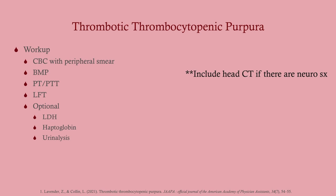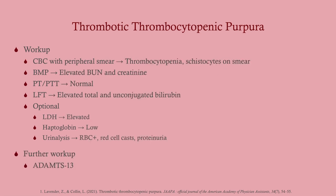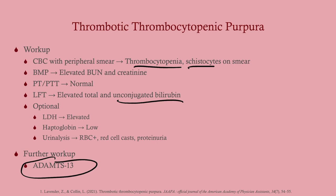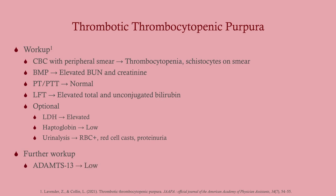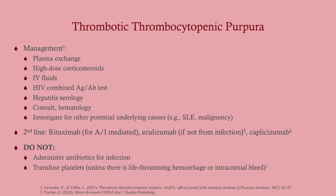Workup includes a CBC with peripheral smear, BMP — because we have bleeding, always get a PT/PTT — and liver function tests, as many of these patients come in jaundiced. Optionally, if the picture looks like hemolytic anemia, get LDH, haptoglobin, and urinalysis. For any patient with neurological symptoms, include a head CT. The classic peripheral smear findings are thrombocytopenia, elevated bilirubin, and schistocytes — the classic picture for microangiopathic hemolytic anemia. For further workup, get ADAMTS13 levels, which will be low and much more specific for TTP.